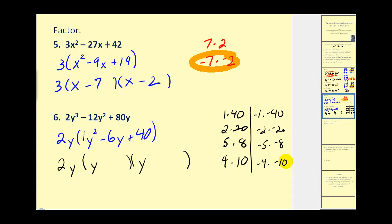However, on this problem, we could sit here all day. None of these factors add to negative 6. Therefore, this problem does not factor any further. The final factored form would be 2y(y² - 6y + 40). So we can't assume these will always factor. And here's an example of that.